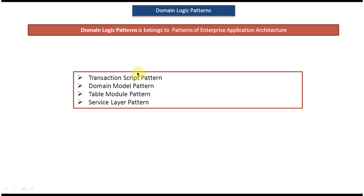There are four design patterns which come under the domain logic patterns: the first one is transaction script pattern, the next one is domain model pattern, the third one is table module pattern, and the fourth and final one is service layer pattern.